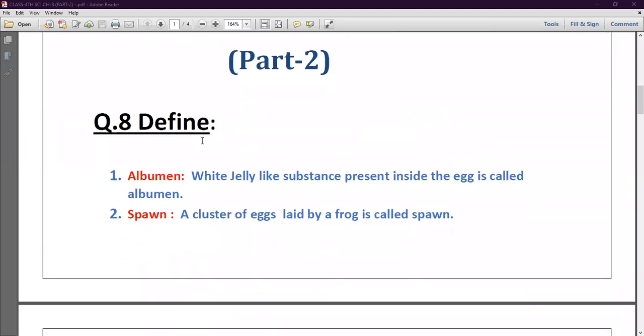Question number eight is define. First question is albumin. What is albumin? White jelly-like substance present inside the egg is called albumin. Second one is spawn. A cluster of eggs laid by a frog is called spawn.